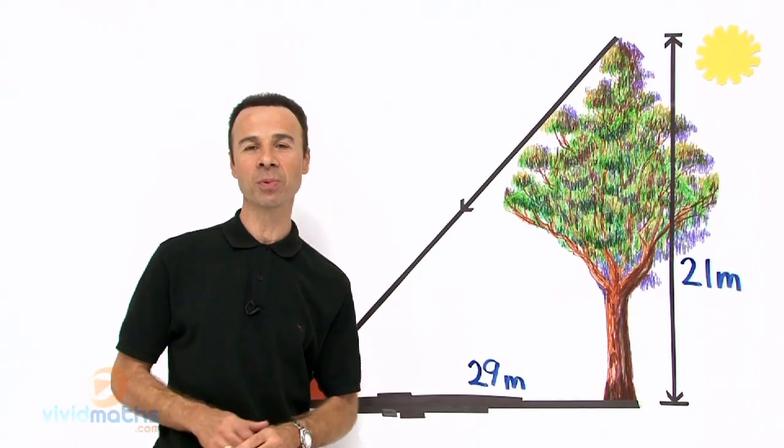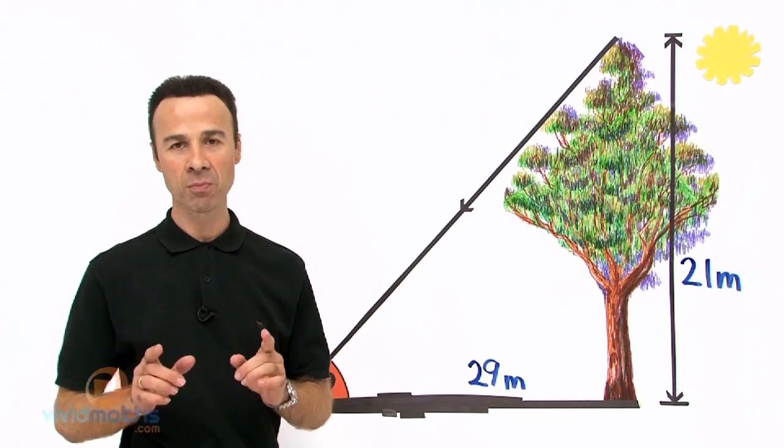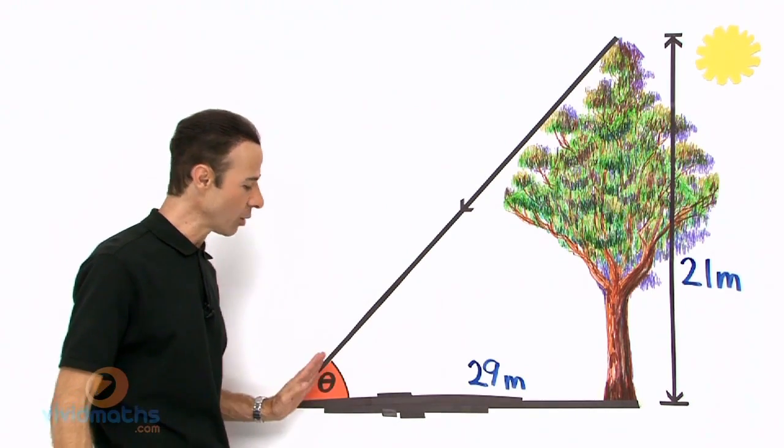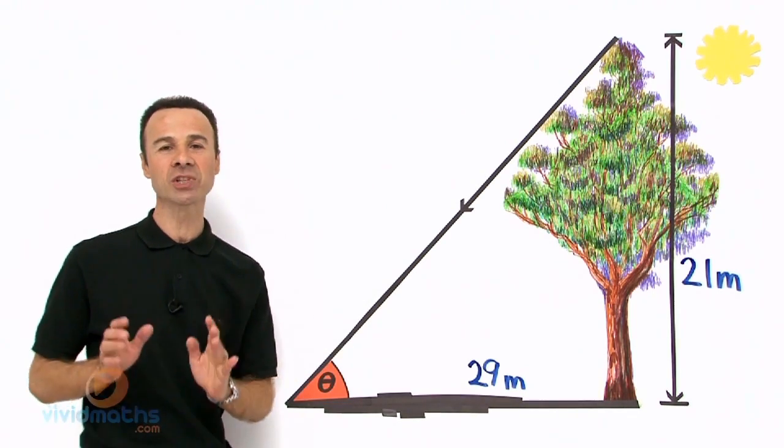Now we are asked in this problem, in this challenge, to actually work out the missing pronumeral which is the angle down here on the ground. I am going to read the question for you.